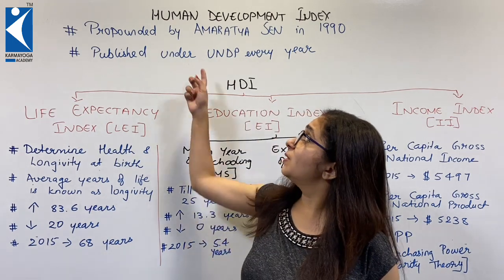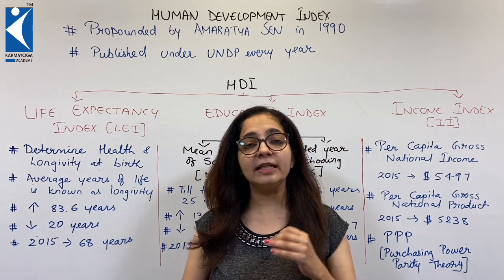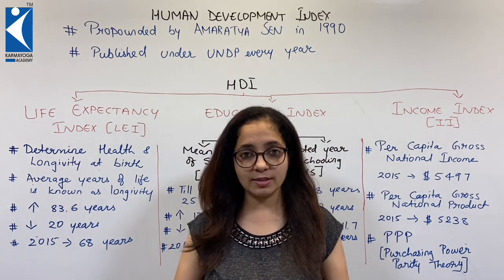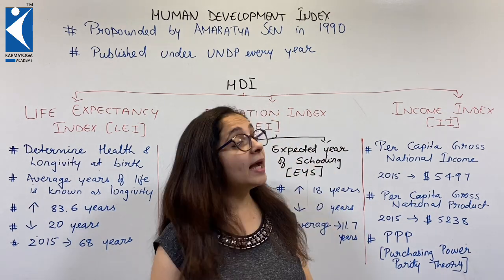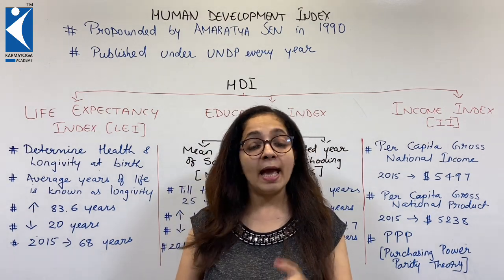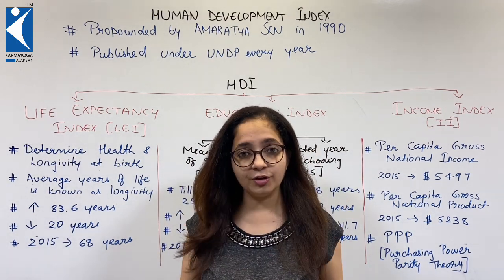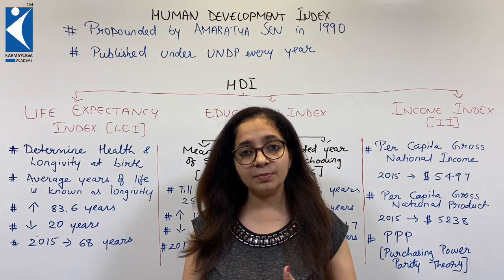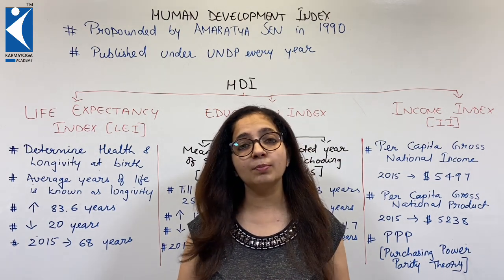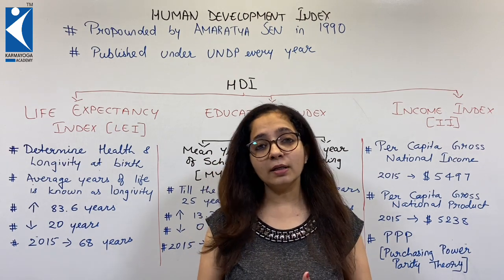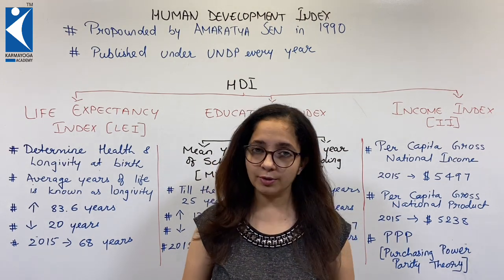HDI was propounded by Amartya Sen, one of the leading economists of India, in the year 1990. After that, the entire theory of HDI has been presented for each country in the report of UNDP — the United Nations Development Programme.